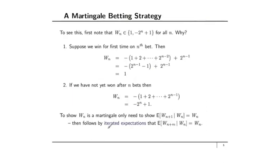To see this, first note that Wn can only take on two possible values: 1, or minus 2 to the n plus 1. Suppose we win for the first time on the nth bet. In that case, Wn equals minus the sum of losses (from $1 on the first bet, $2 on the second, up to 2^(n-2) on the (n-1)th bet) plus the win of 2^(n-1) on the nth bet. Using the geometric series formula — a(1 - r^n)/(1 - r) — this sum equals 2^(n-1) - 1, so Wn equals minus (2^(n-1) - 1) plus 2^(n-1), which simplifies to 1. Thereafter we always have 1, since we stop playing once we win.